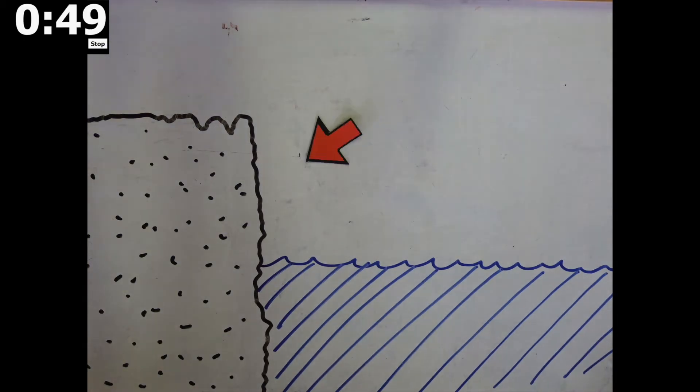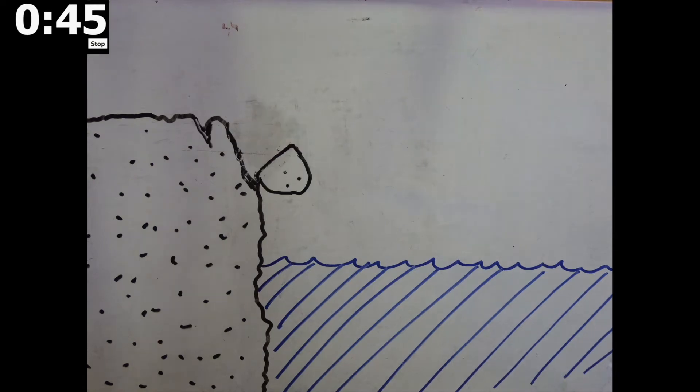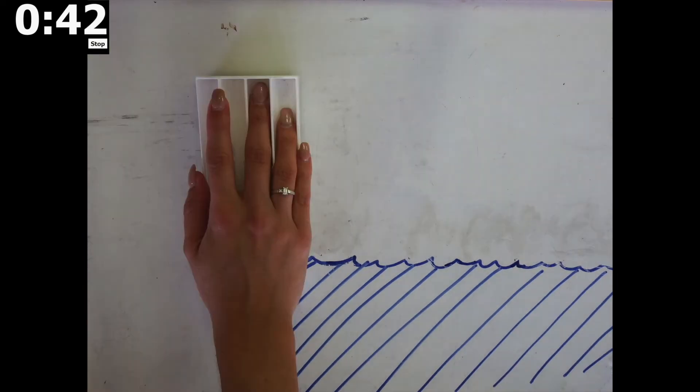Where a glacier ends in water, it creates a cliff. Consequently, bits of ice, or icebergs, can break off if cracks at weak points in the ice penetrate right through the glacier.